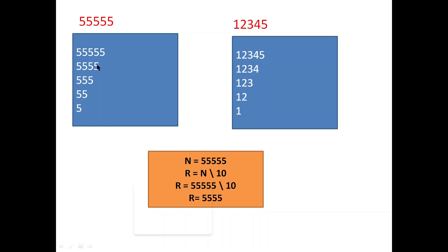Next time we remove the last digit again and only three digits are left, so we print that. Again from three digits we remove the last digit and two digits will be printed. Then we remove the last digit again and only one digit will be printed. We are repeatedly doing the same thing — just removing the last digit each time — so we need to use a loop.